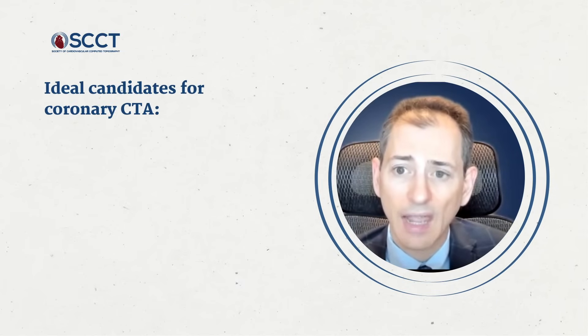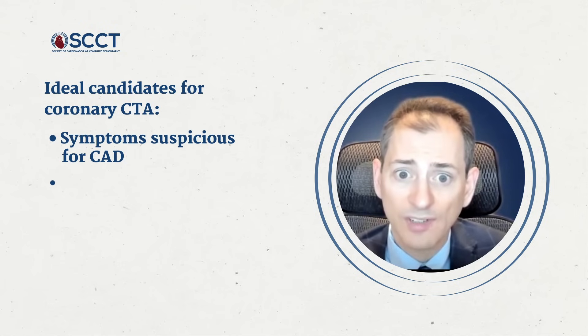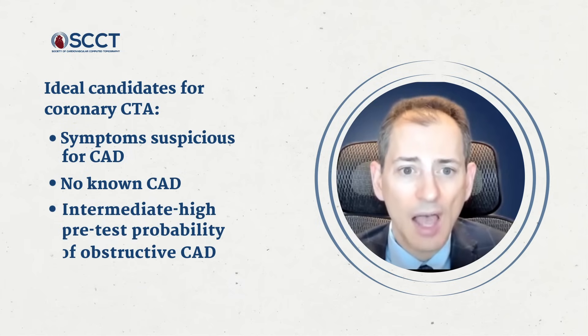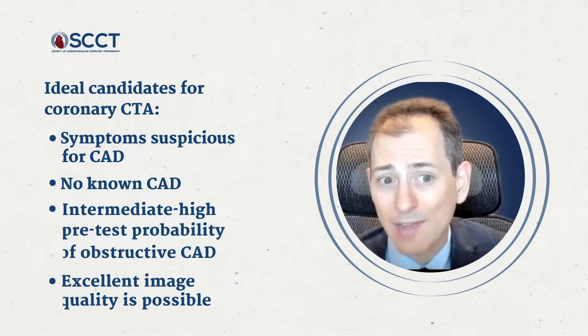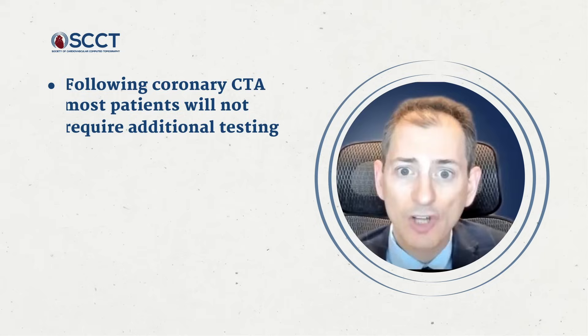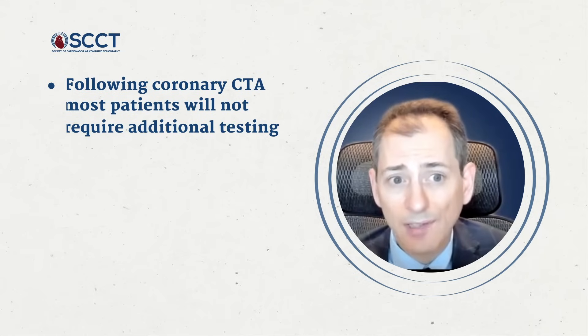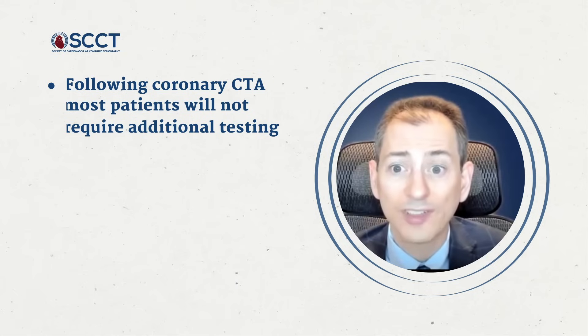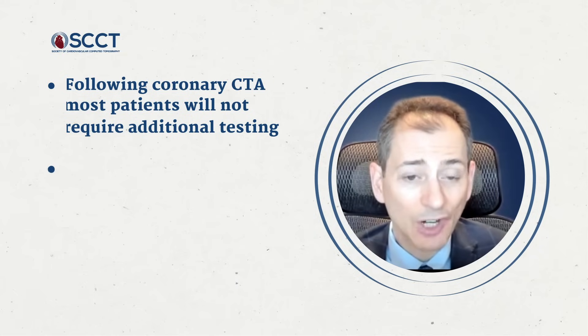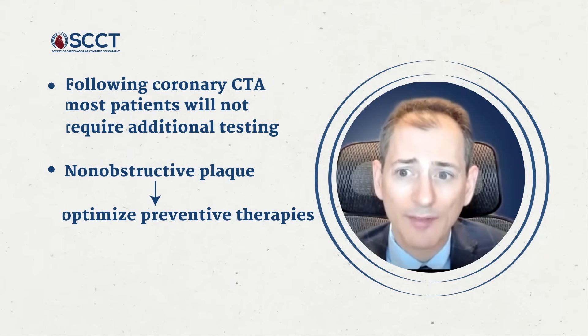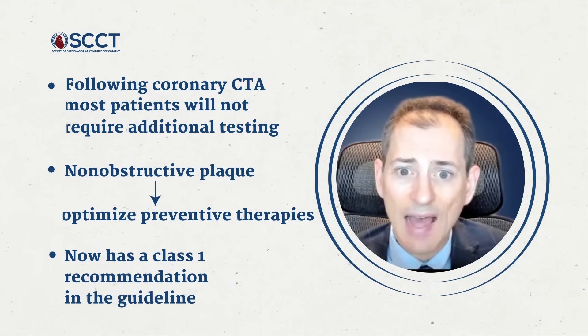In conclusion, ideal candidates for coronary CTA are individuals with symptoms suspicious for coronary disease, no known coronary disease, intermediate to high pretest probability of having obstructive disease, and when excellent image quality is possible. Following coronary CT angiography, most patients will not require additional testing, as the majority will have normal coronary CTA or non-obstructive plaque. When non-obstructive plaque is present, we want to optimize preventive therapies — this now has a class 1 recommendation in the guideline. When obstructive coronary disease is present, it can also be treated with preventive therapies, but one can consider doing additional functional testing with either FFR CT or stress testing.